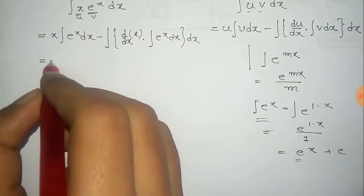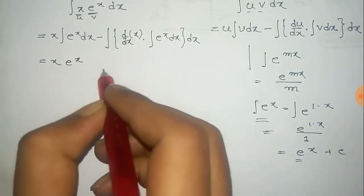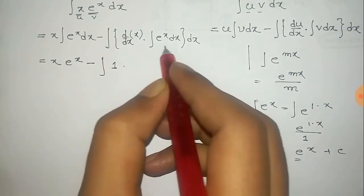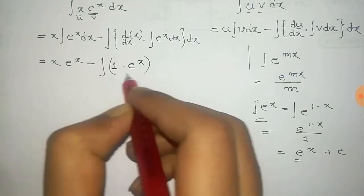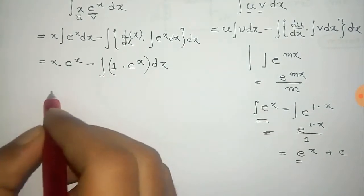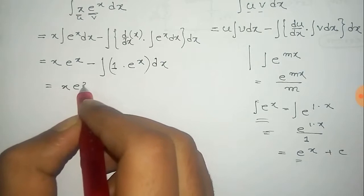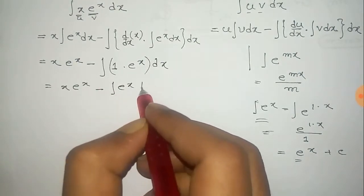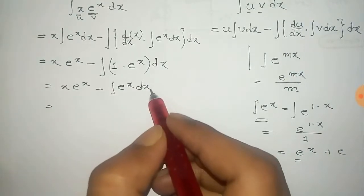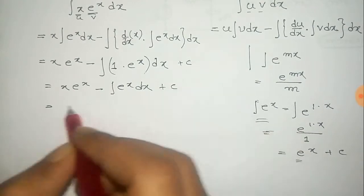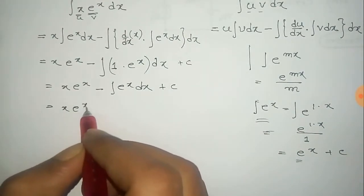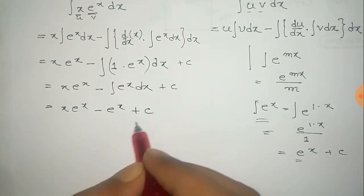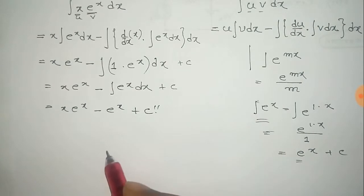So here x into the integral of e to the power x is e to the power x, minus the total integral of the derivative of x, which is 1, into the integral of e to the power x, which is e to the power x, dx, plus constant c. That gives us x e to the power x minus the integral of e to the power x, which is e to the power x, plus a new constant c.